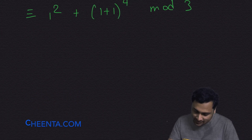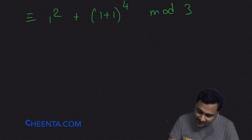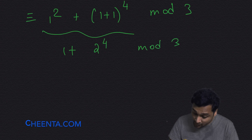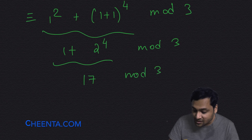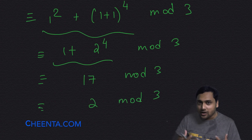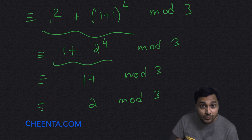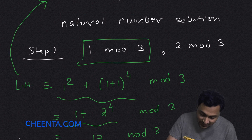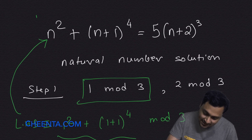Coming back to this congruence: the left hand side becomes 1 plus 2 to the power 4, modulo 3, which is 17 mod 3. Now 17 mod 3 is simply 2 mod 3. At every step we are dividing by 3 and looking at the remainder.